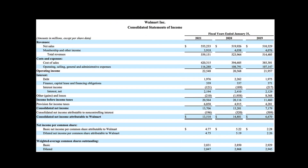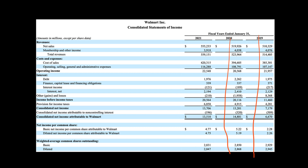Here's Walmart's income statement for 2021, 2020, and 2019 — but we're just going to look at 2021. We can see their consolidated net income, net income attributable to non-controlling interest, and the weighted average number of common shares outstanding, which they've already calculated for us. All these numbers are in millions except the per share amounts.